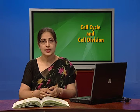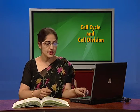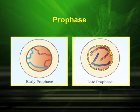Look at this diagrammatic representation of prophase. Notice the difference in the early prophase and the late prophase. The chromosomes have become shorter and thicker and the nuclear envelope can be seen to be disintegrating.